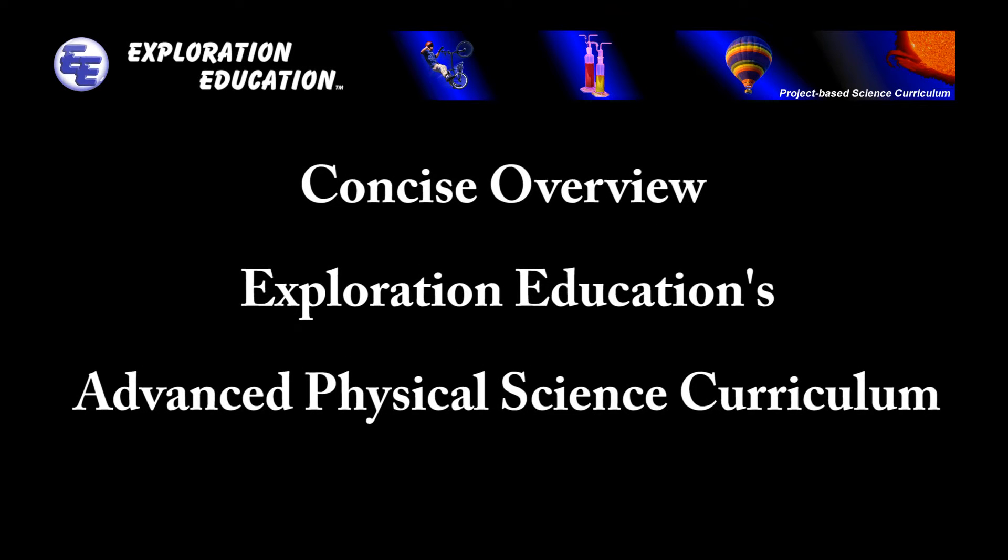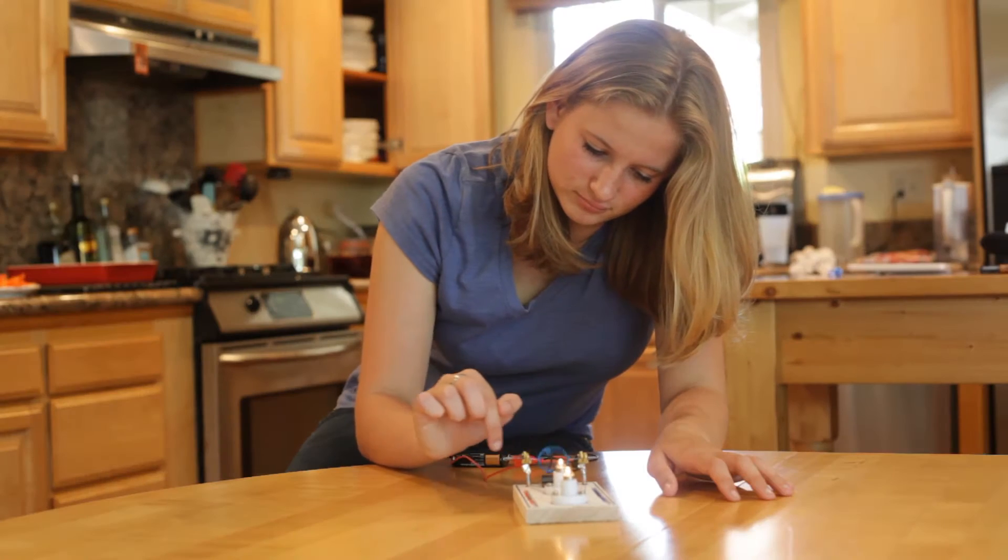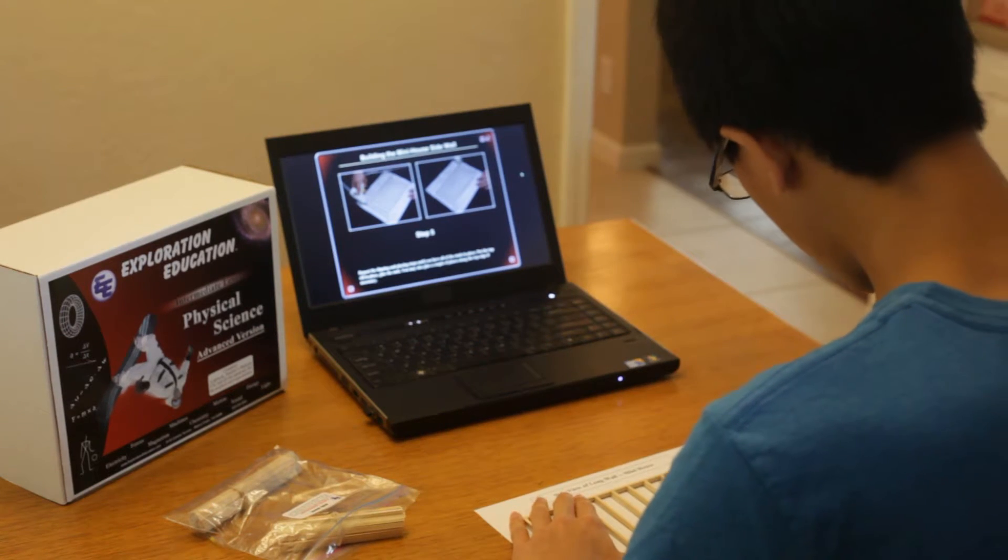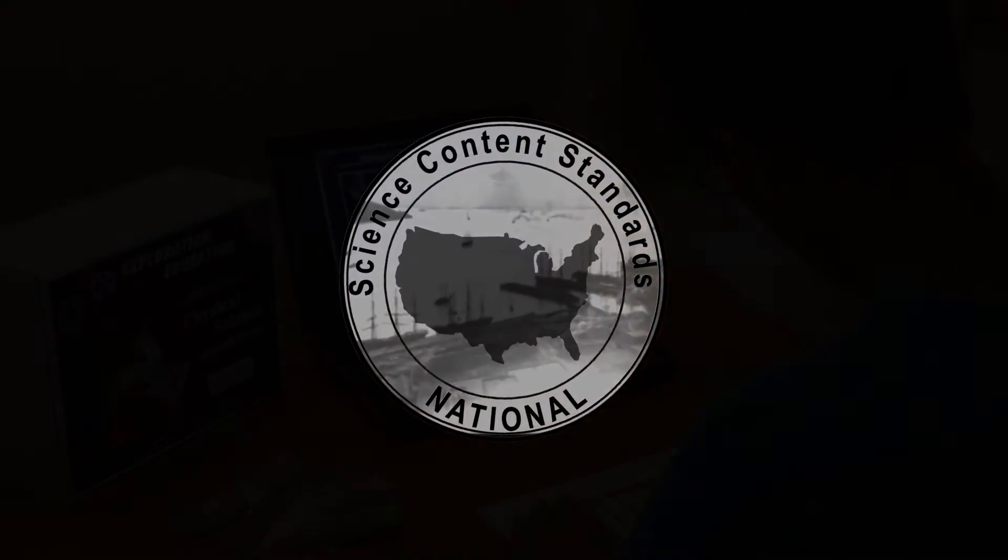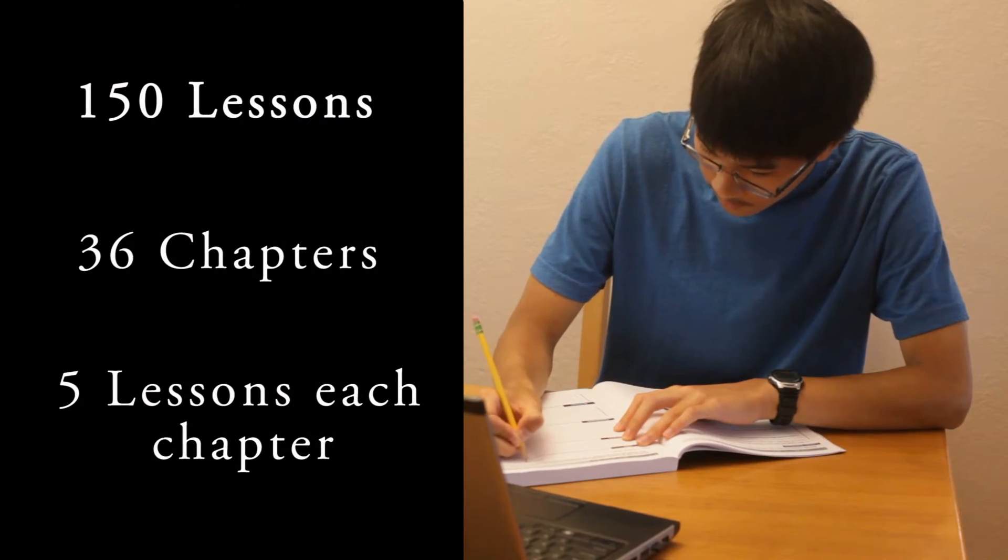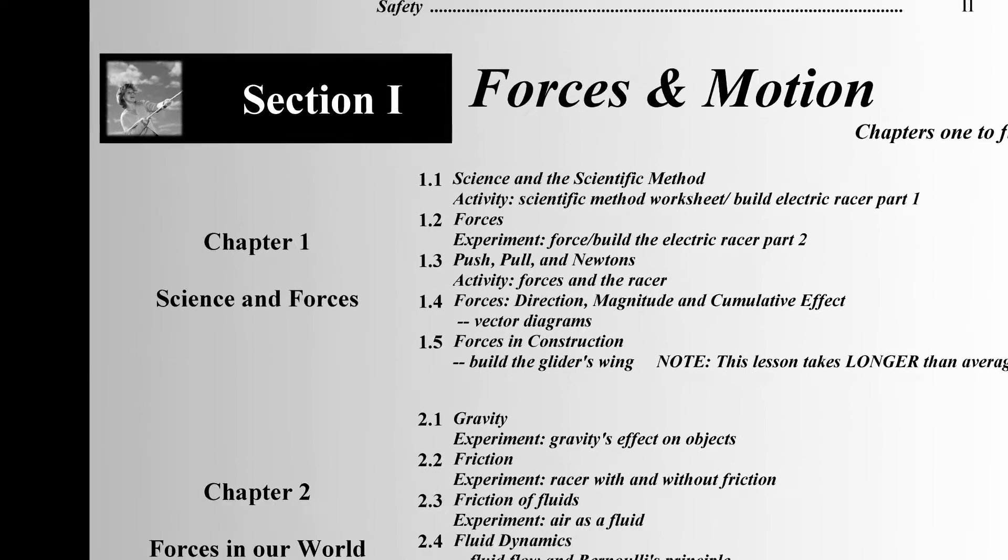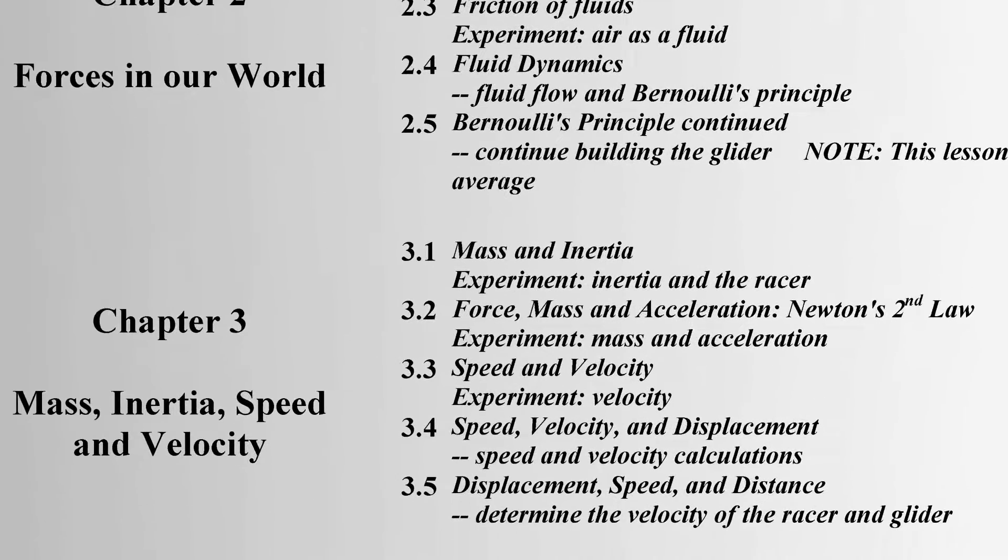Exploration Education's Advanced Physical Science course is an excellent choice for your student and can be taken either in junior high or early high school. This easily implemented course covers all of the National Science Standards for Physical Science. The 150 lessons are broken down into 36 chapters, with each chapter having 5 lessons. So the student completes 5 lessons each week as they progress through the school year.